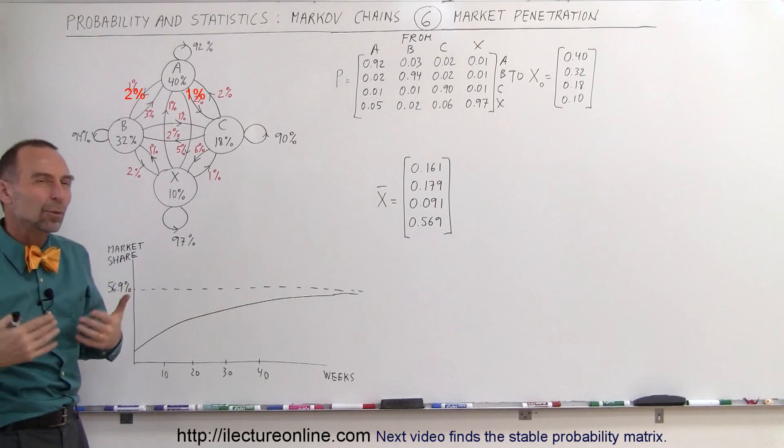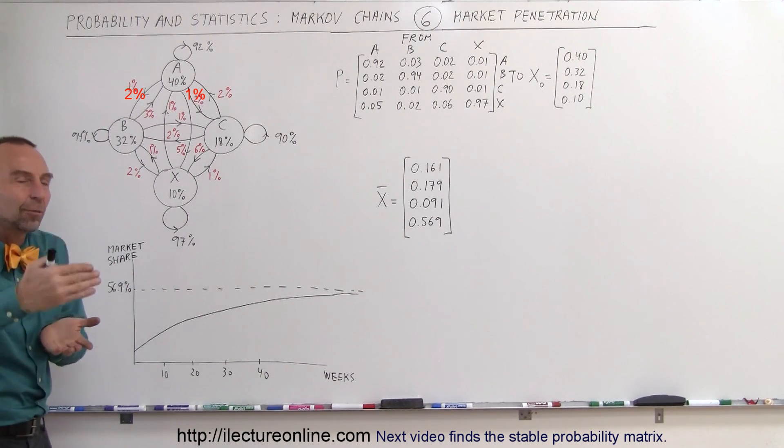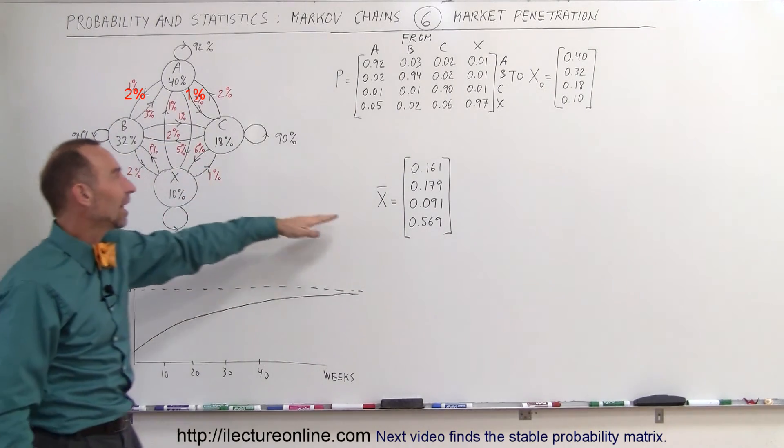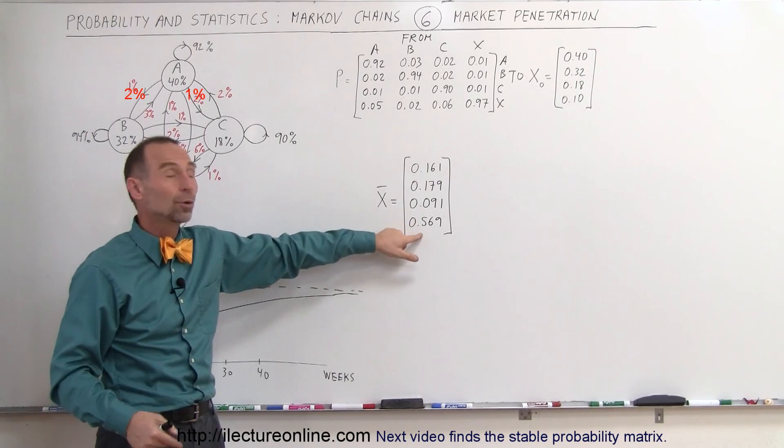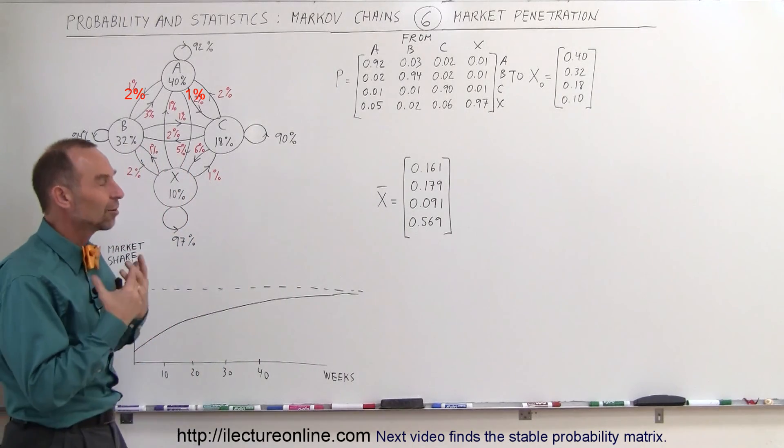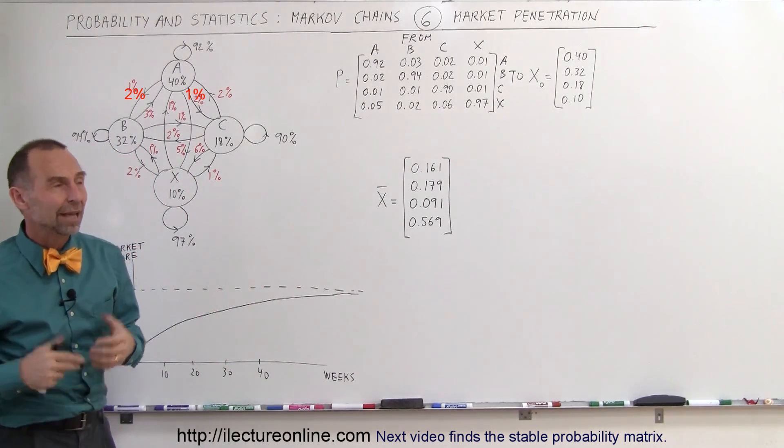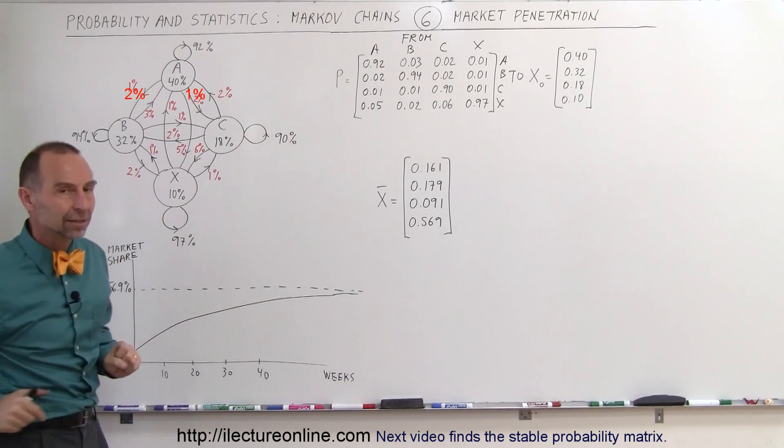Those are the kinds of things we do in business to try to find out whether or not we're going to have a successful penetration based upon these studies. If this analysis of Markov chains shows we will have a very poor penetration—let's say after a whole year we'd only be up to 12% instead of 10%—we need to change something. We need to get people to want to buy brand X instead of A, B, or C, and find ways to make that happen. But here's how we mathematically calculate that.